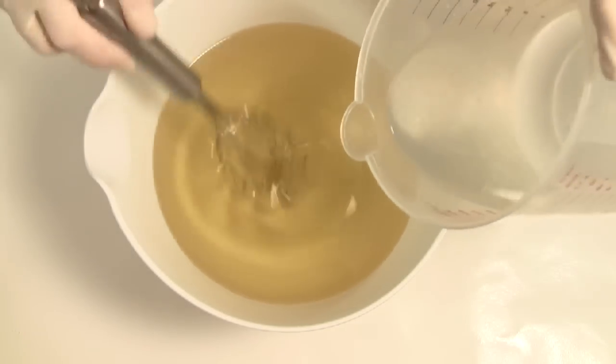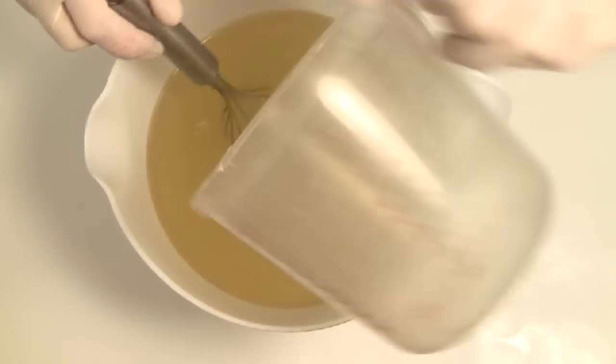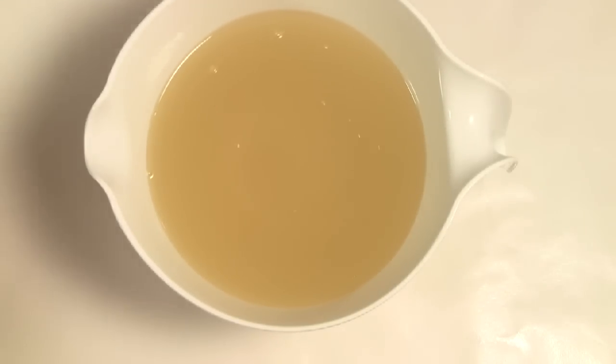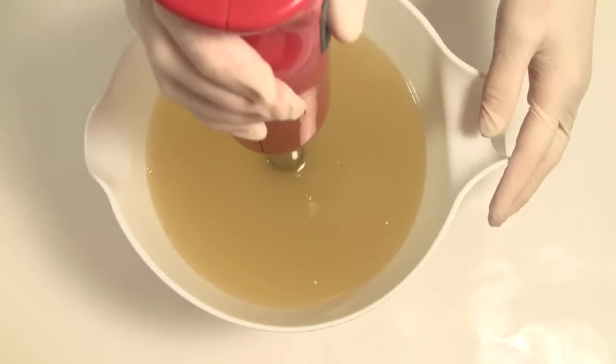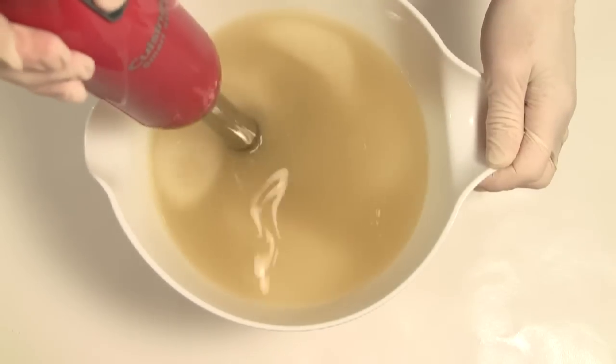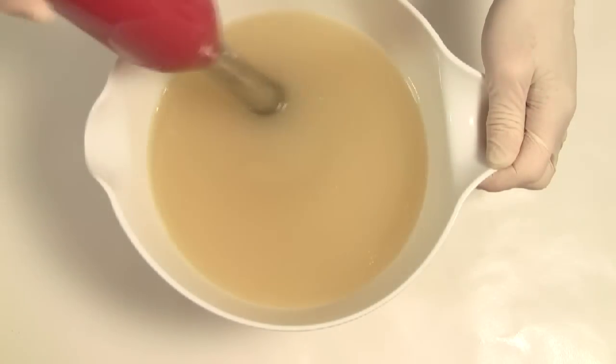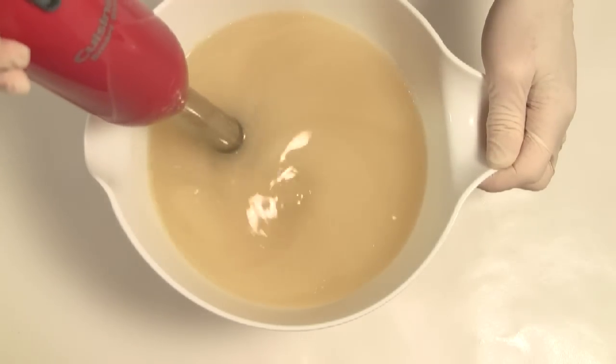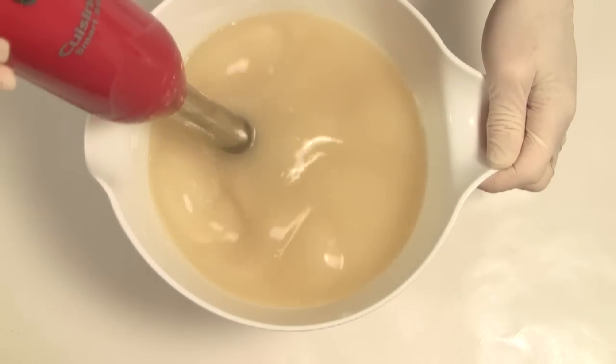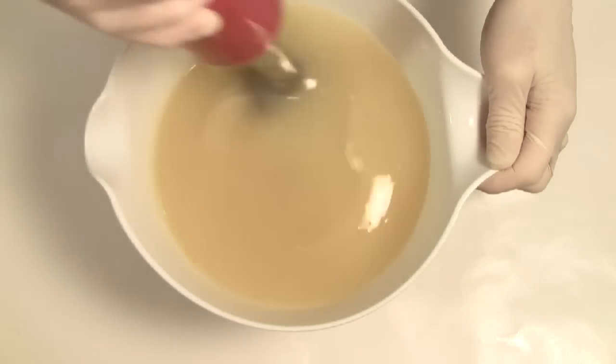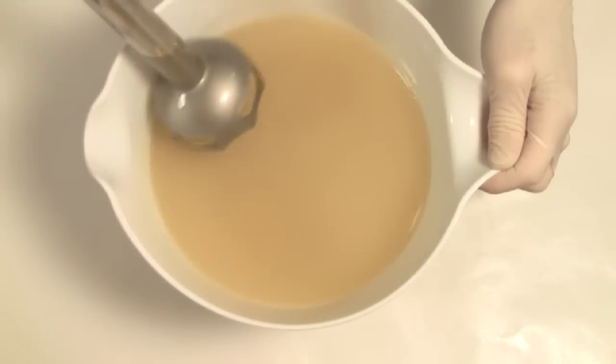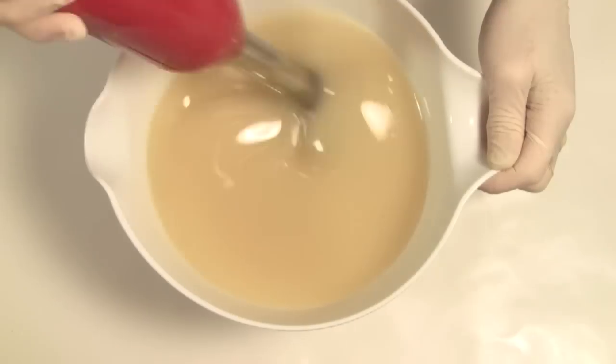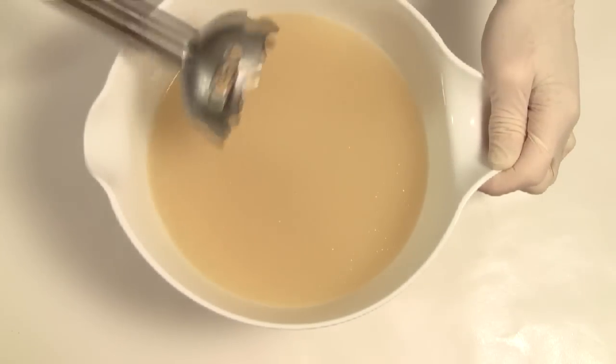We then want to add the lye and mix until emulsification. This is the stage just before trace. Slowly pulse and stir with your stick blender until no more oil rises to the top. Once everything is a uniform color, you have reached emulsification.